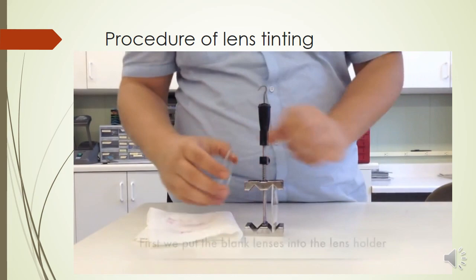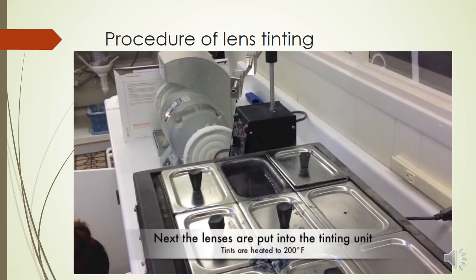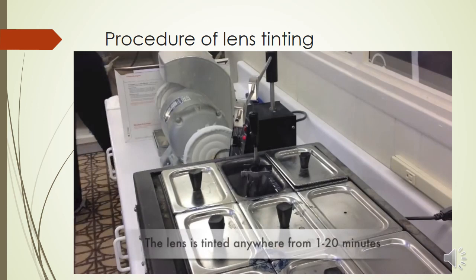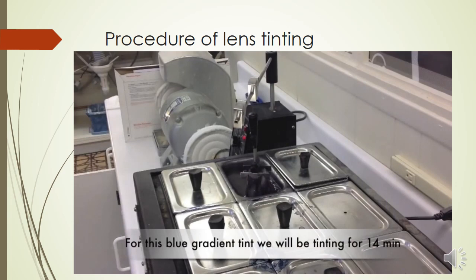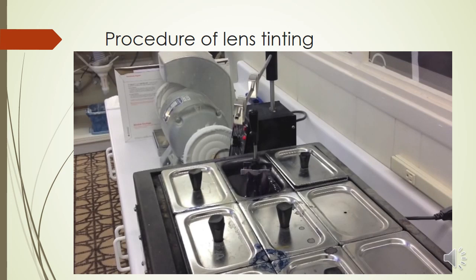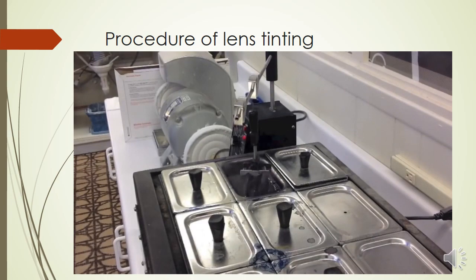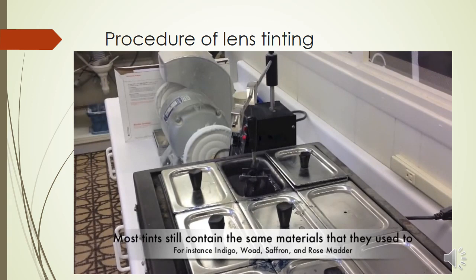The tinting procedure begins by taking a clear plastic lens and clamping it with a special tool. The tint can be gradient or complete. In this demonstration, a gradient tint is shown where half the lens is tinted and half has a gradual lesser amount of tint. The machine is essentially a large heater where the dye is brought to high temperature so it can penetrate the lens material. An oscillating arm ensures a gradual and even tint.